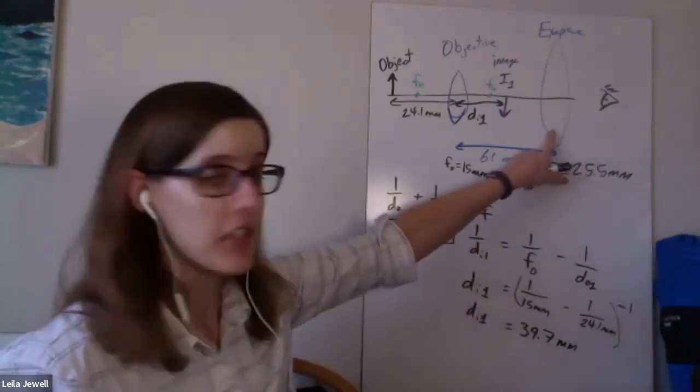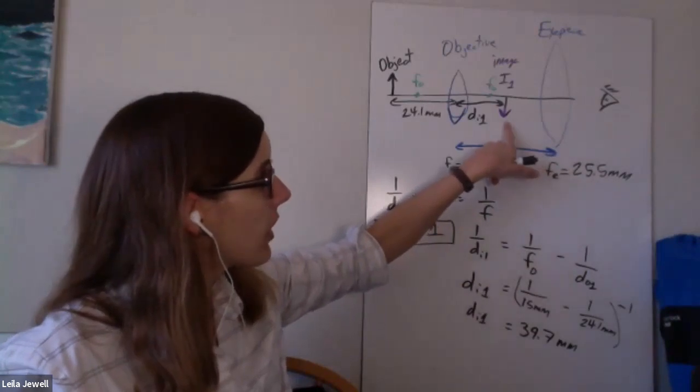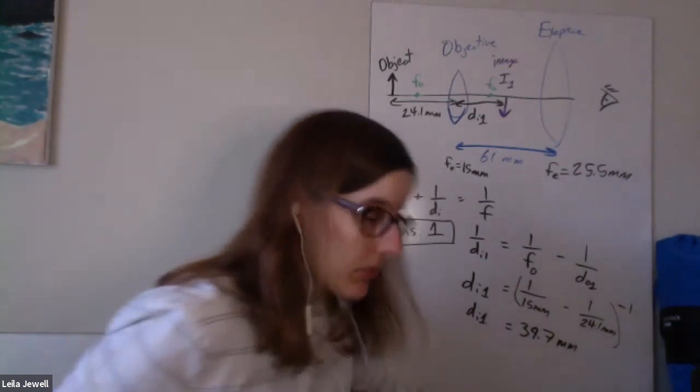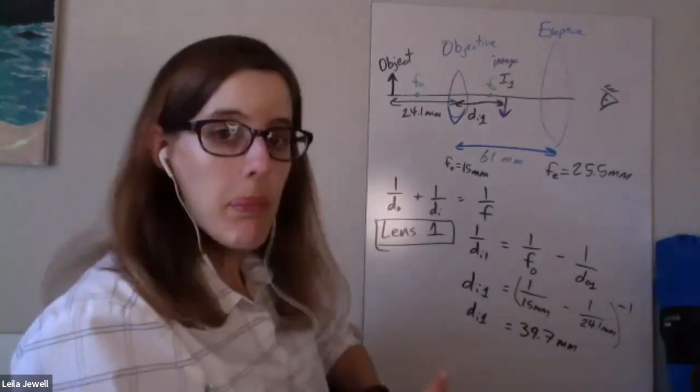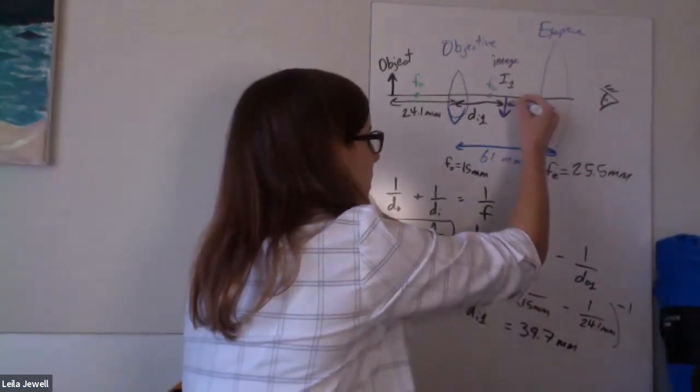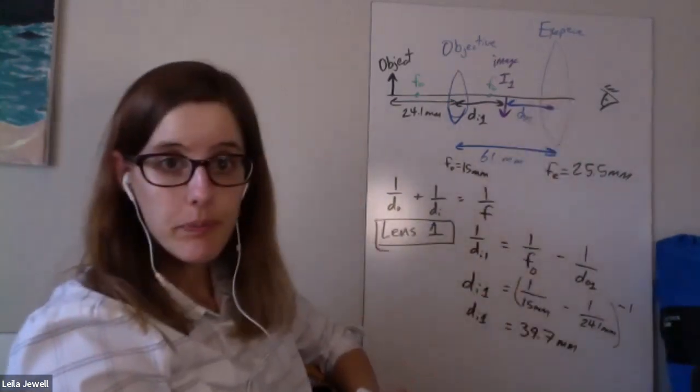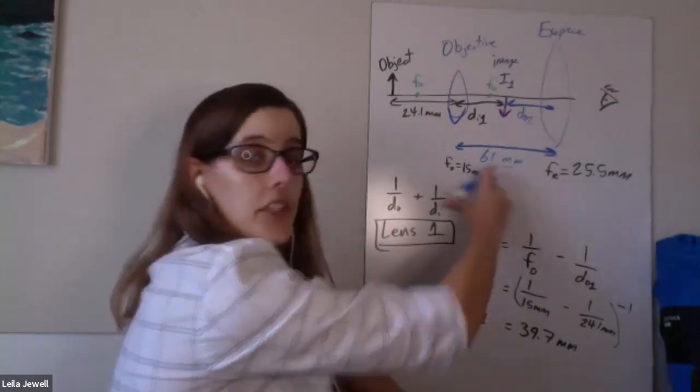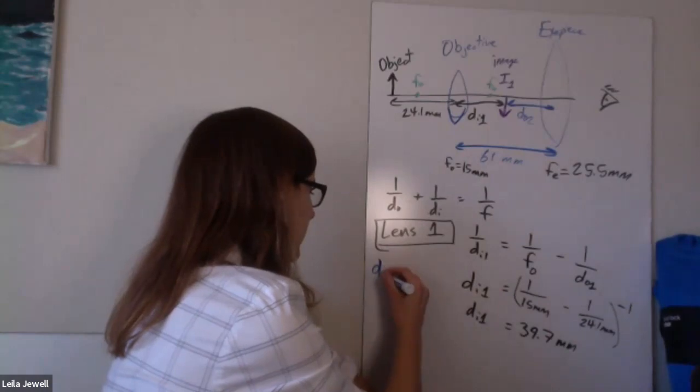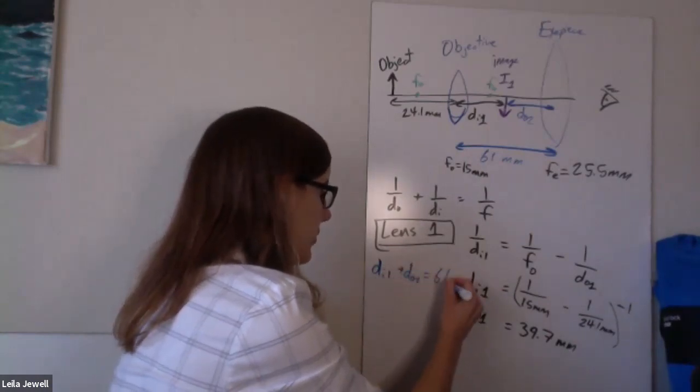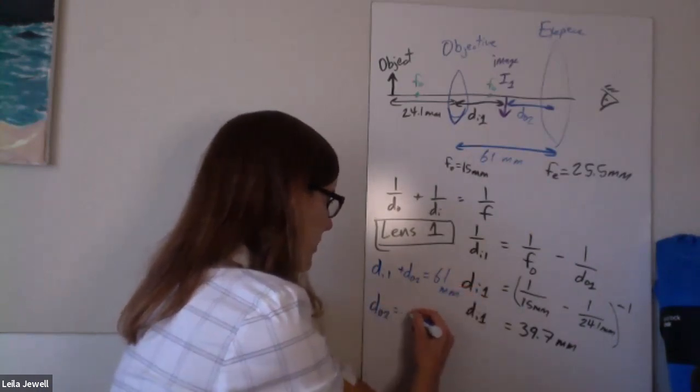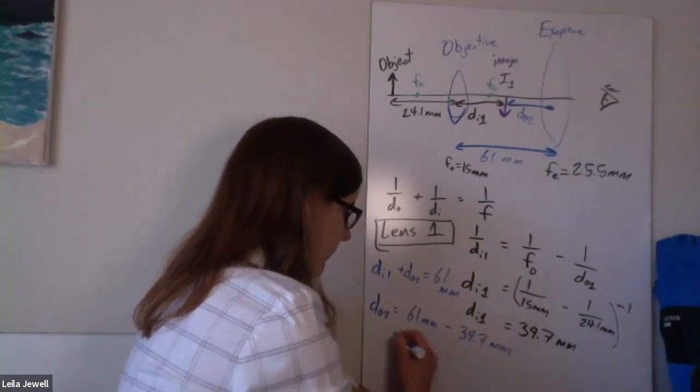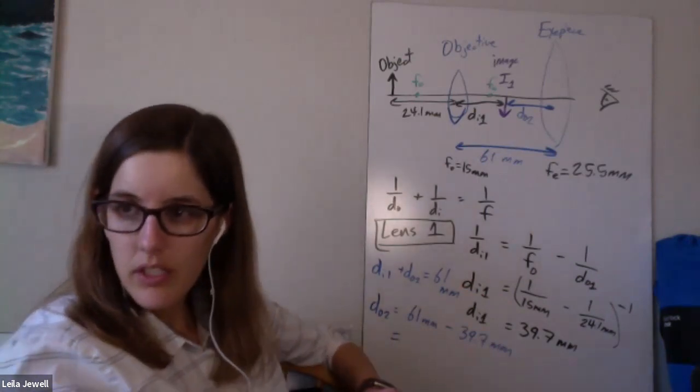Now, in order to know what the eyepiece is going to do, what our second lens is going to do, we need to know how close our image is, which is going to be the object of the eyepiece. So we need to find that object distance. So for the second half, I'm going to switch colors, maybe to blue. This distance is going to be object two, DO2. And we can get that object distance by noting that the image distance of one plus the object distance of two have to equal that 61 meters. So di one plus do two have to equal 61 millimeters. Or in other words, do two is equal to 61 millimeters minus di one 39.7 millimeters. And so if we're subtracting those, it should come out to about 20. Yes, 21.3.